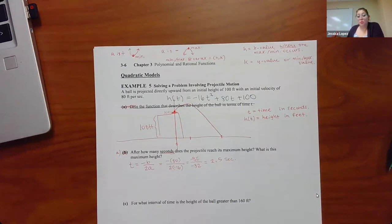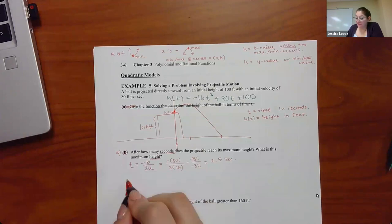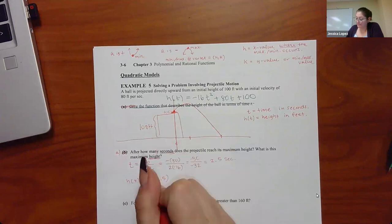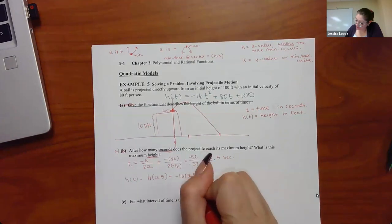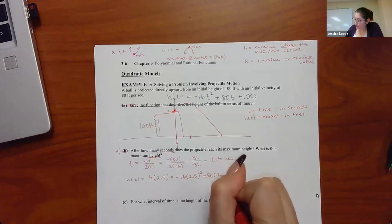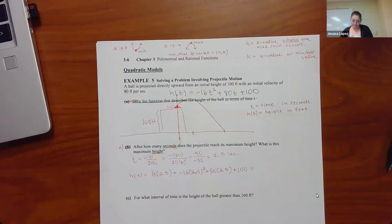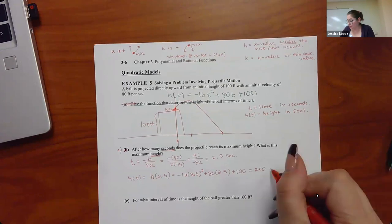The next question: what is the maximum height? Now they want the y-value (height in feet), so I plug t = 2.5 into the function: −16(2.5)² + 80(2.5) + 100. Using my calculator, I get 200. So the maximum height is 200 feet.